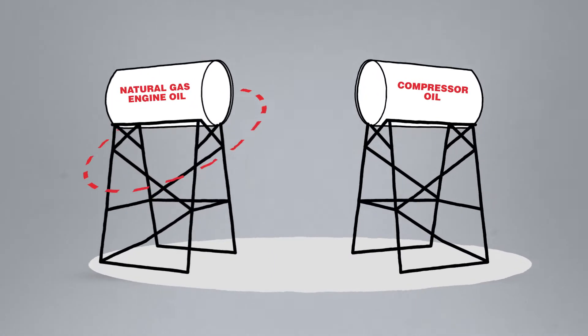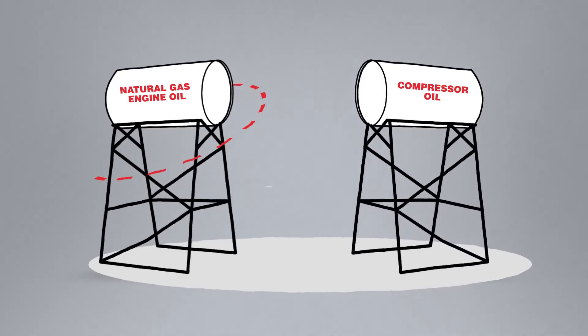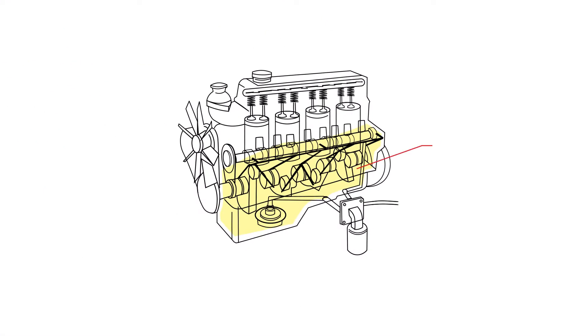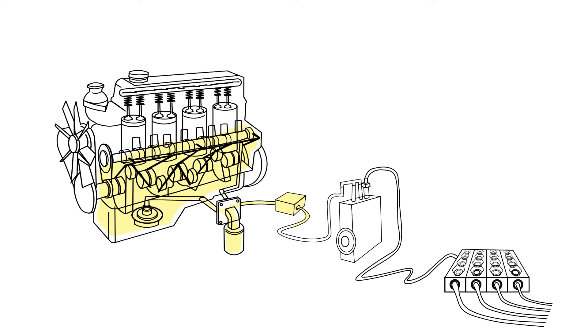Instead of using a separate compressor oil from a different oil tank, oil sweetening, also referred to as slipstreaming, draws used oil from the engine or compressor crankcase, filters the oil, and feeds it into the compressor force feed system.